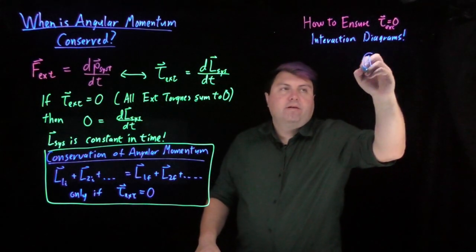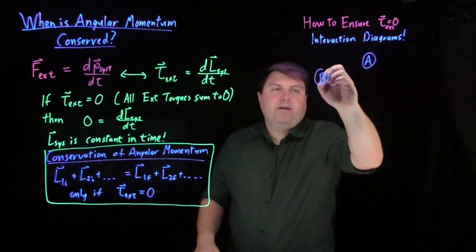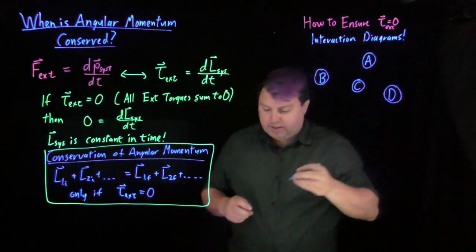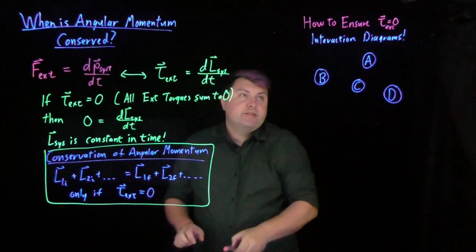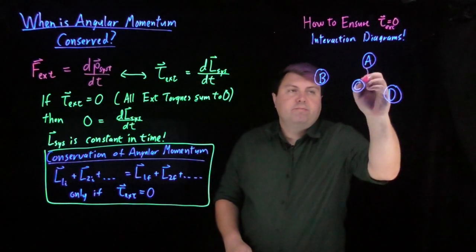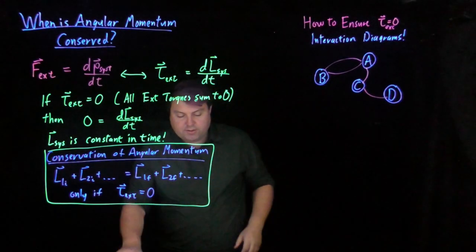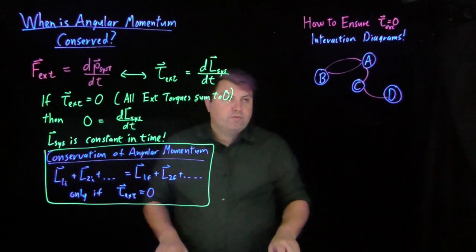So if I have a set of interaction diagrams, A, B, C, D, and a set of connections between them, then what I need to do is I need to look at each force to see if the torque from the force is zero.